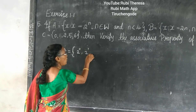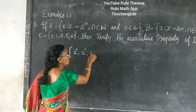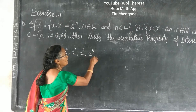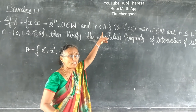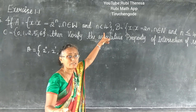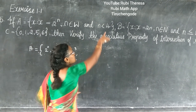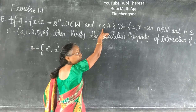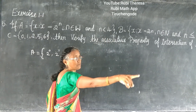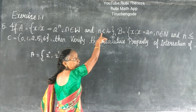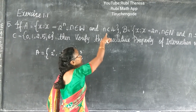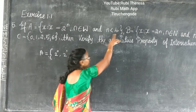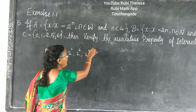2 to the power of 1, 2 to the power of 2, 2 to the power of 3, 2 to the power of 4 — you should not write this. Why? Because N is less than 4, so it stops at 3. If it were given as equal to, then you should write up to 4, but since N is less than 4, you stop at 3. Is it okay?